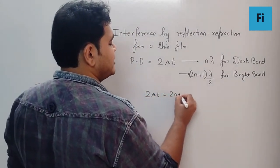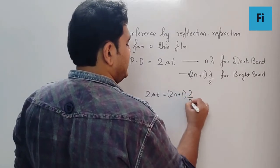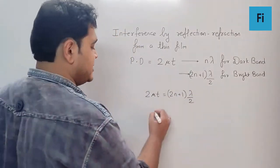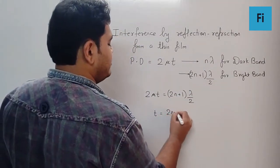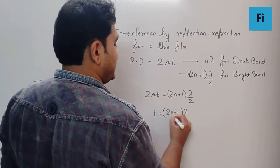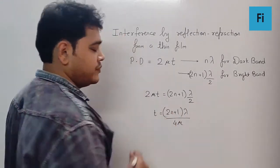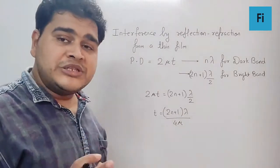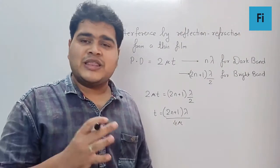That means I'm going to take 2μt to be equal to (2n+1)λ/2, which means the thickness is going to be (2n+1) times λ/4μ. Now we need to assume certain things because no information is given in this question.